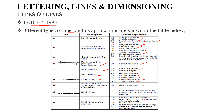Chain thick lines indicate surfaces to which a special requirement applies. Chain thin double dash lines are used for outlines of adjacent parts, alternatives or extreme positions of movable parts, centroid lines, initial outlines, and parts situated in front of the cutting plane.